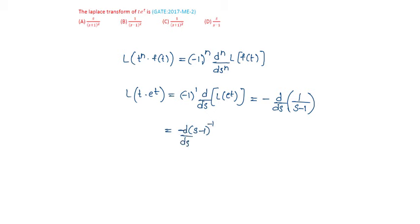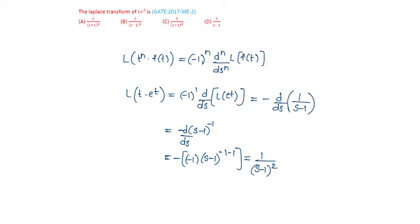Differentiating, this is equal to minus into minus 1 into s minus 1 to the power of minus 1 minus 1, which is equal to plus 1 by s minus 1 whole square. So the answer is option b.